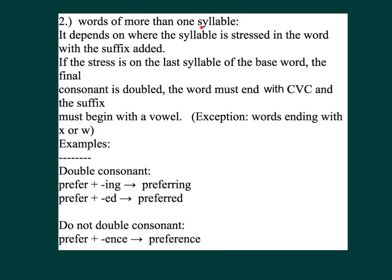Number two: words of more than one syllable. It depends on where the syllable is stressed. If the stress is on the last syllable of the base word, the final consonant is doubled — the word must end with CVC and the suffix must begin with a vowel. Exception: words ending with X or W. Examples — double consonant: prefer + ING = P-R-E-F-E-R-R-I-N-G, preferring; prefer + ED = P-R-E-F-E-R-R-E-D, preferred. No doubling: prefer + ENCE = P-R-E-F-E-R-E-N-C-E, preference.